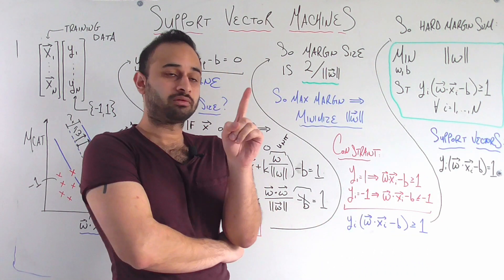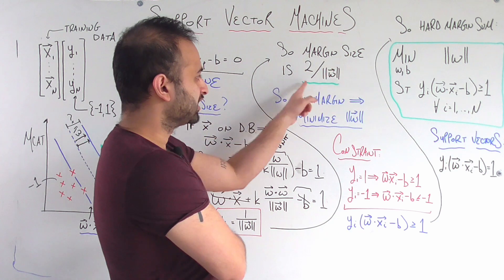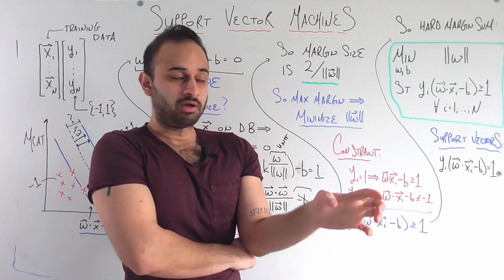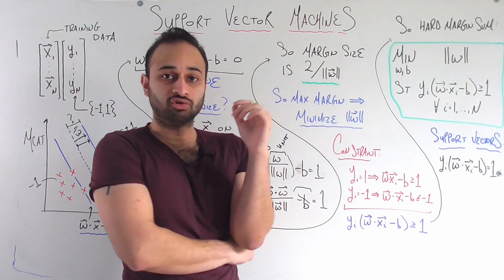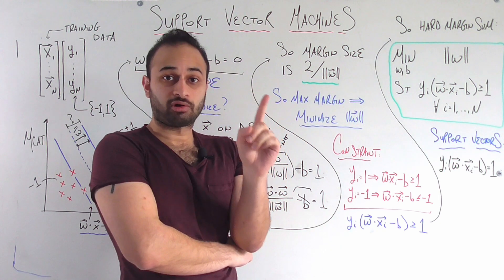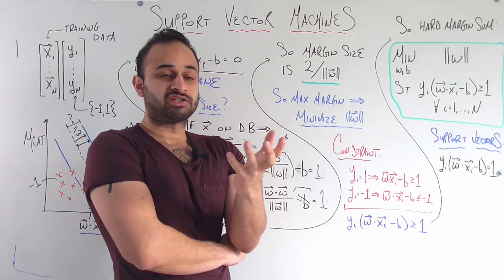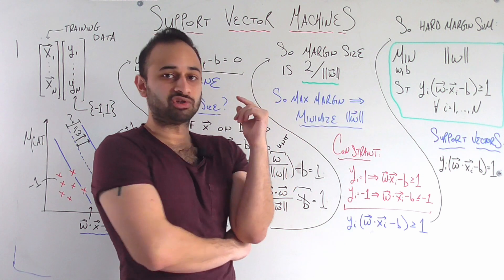So if I want to maximize the margin, I need to maximize this quantity, which is the same thing as minimizing the denominator, so I need to minimize the magnitude of w. So the first part of the story is done. We know that we need to pick some kind of w and b, such that we're going to minimize this magnitude of w.